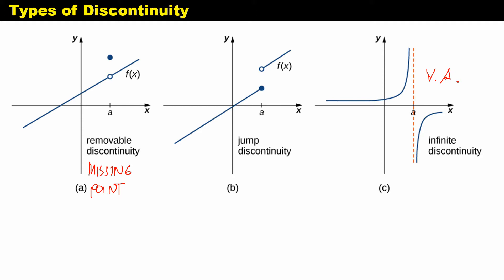In this lesson, I will teach you how to identify the point of discontinuity and its type algebraically. If in a given function f(x) you have, for example, (x+1) in the numerator and (x+1)(x-1) in the denominator, and there is one term or more that you can cancel out, that particular factor is a missing point discontinuity, since you cancelled it using a factor in your numerator.